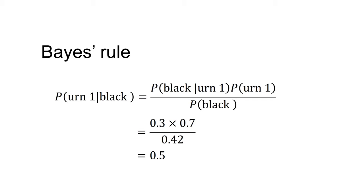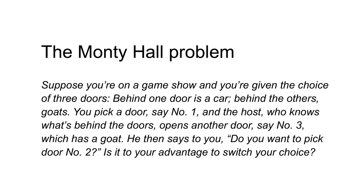For the third example, we'll return to the Monty Hall problem. Suppose you're on a game show and given the choice of three doors. Behind one door is a car; behind the others, goats. You pick door number one, and the host — who knows what's behind the doors — opens door number three, which has a goat. He then says: do you want to pick door number two? Is it to your advantage to switch? The rules are: the host must always open a door you did not choose, must always reveal a goat and never the car, and must always offer you the choice to switch.